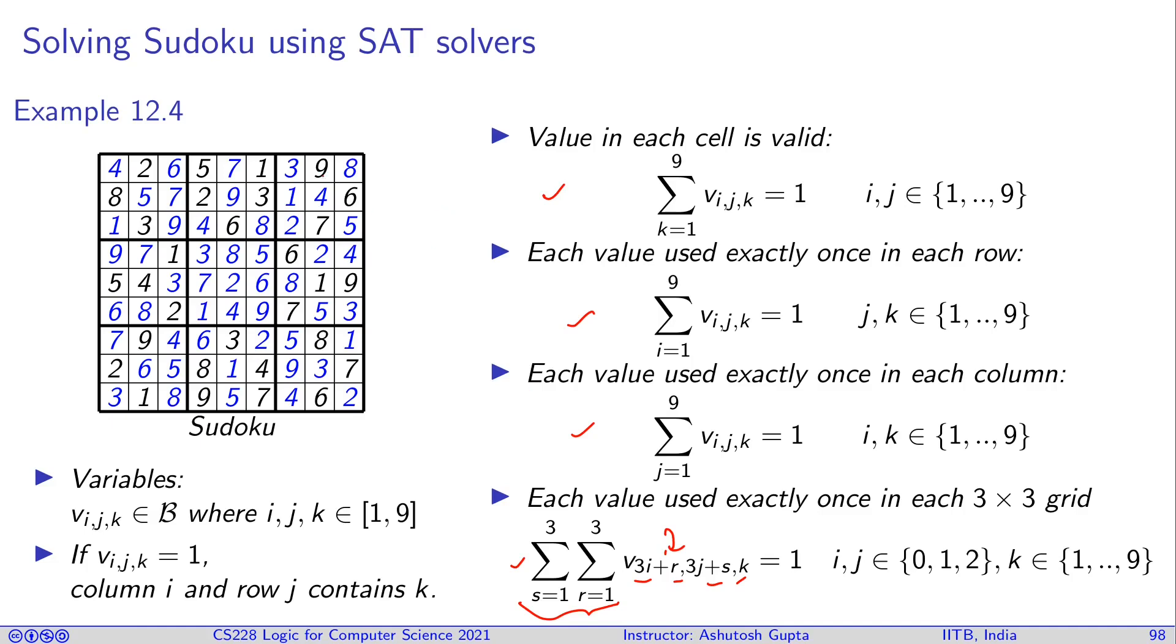So in this cell, you have a 9 is 1. So then you say, okay, the v_ij9 at this point, i, j for this position, is that bit is set to 1. And then you put all these constraints together and solve it, get a satisfying assignment.